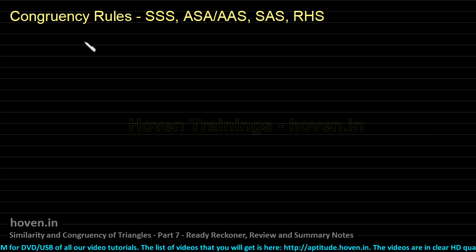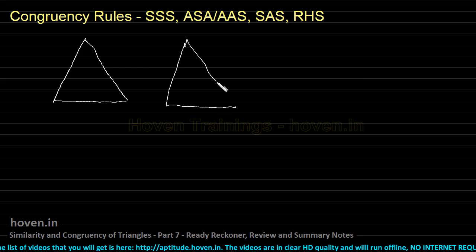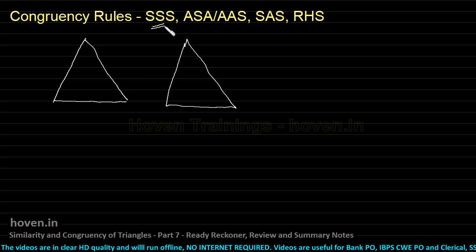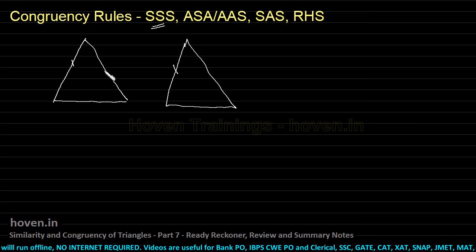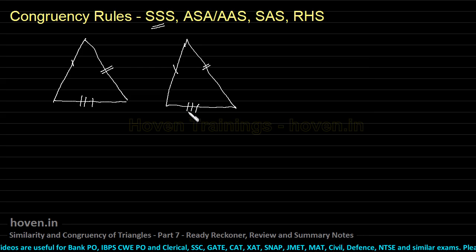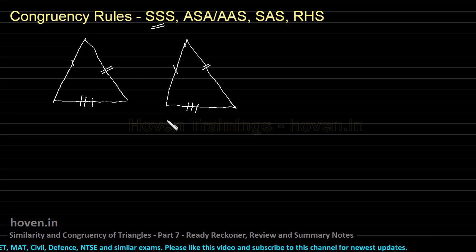Congruent triangles are those triangles which completely overlap each other. There are various tests for congruency. The first is the SSS rule: if the respective sides are equal — this side equal to this side, this side equal to this side, and this side equal to the third corresponding side — then the two triangles are congruent by the SSS rule. We just ensure all three sides are correspondingly equal.